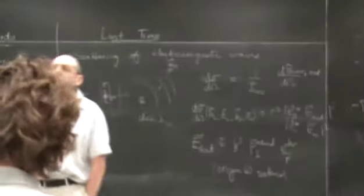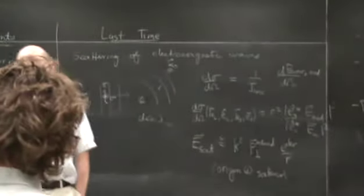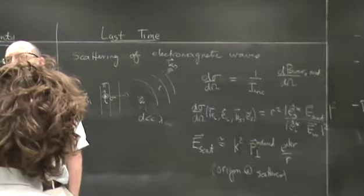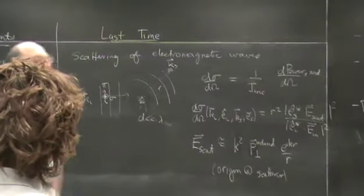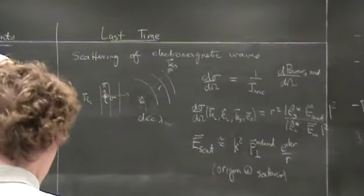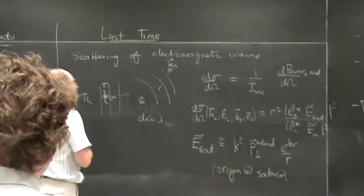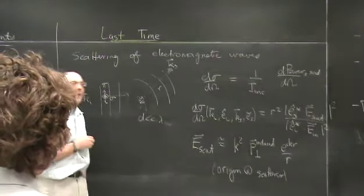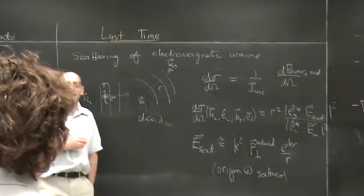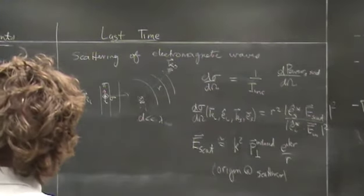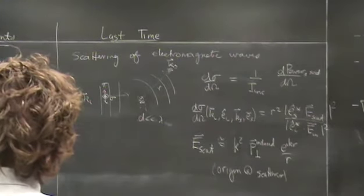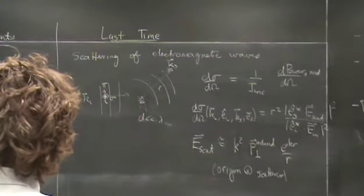Can you explain why they're named pi and sigma? They're named pi and sigma because of the letters P and S, which come from German: the German word for parallel is 'parallel' and the German word for perpendicular starts with an S.